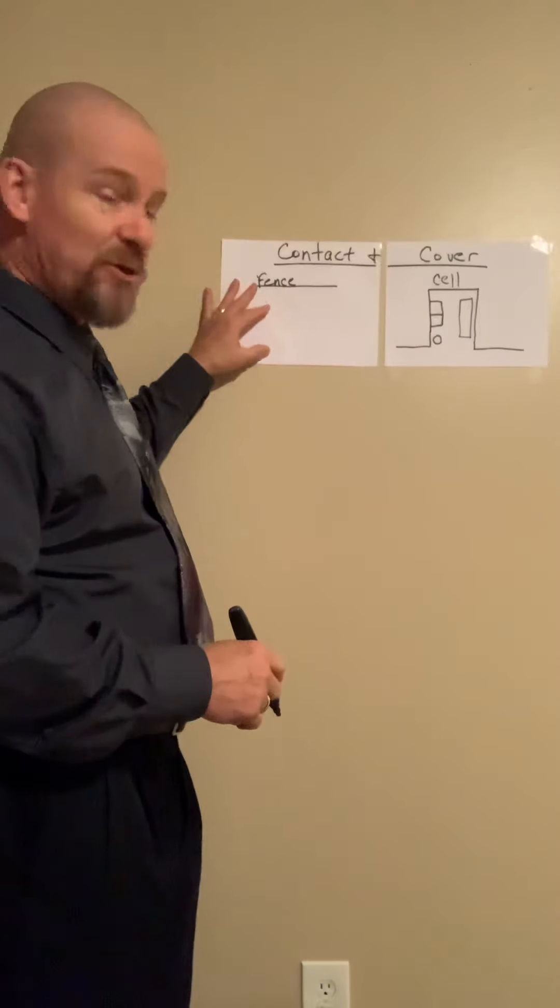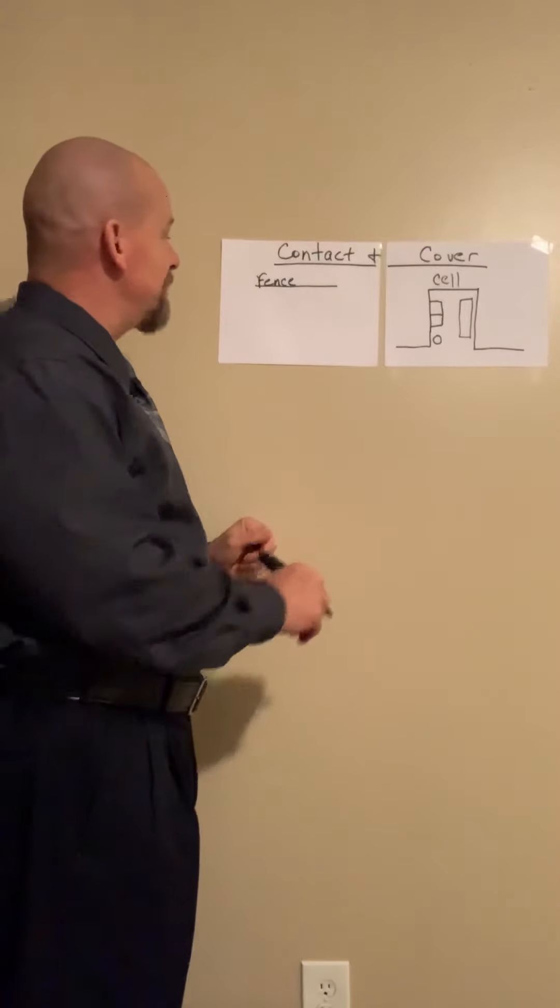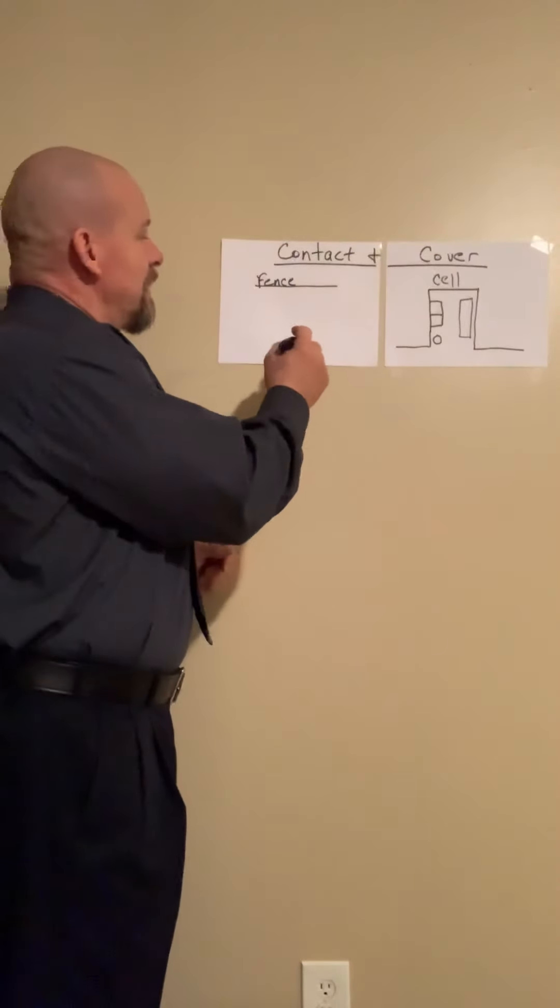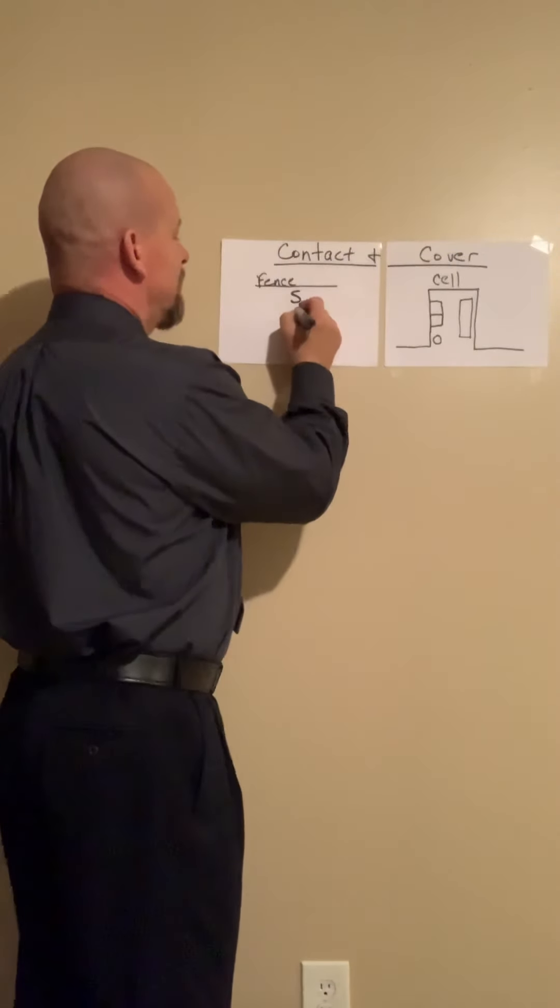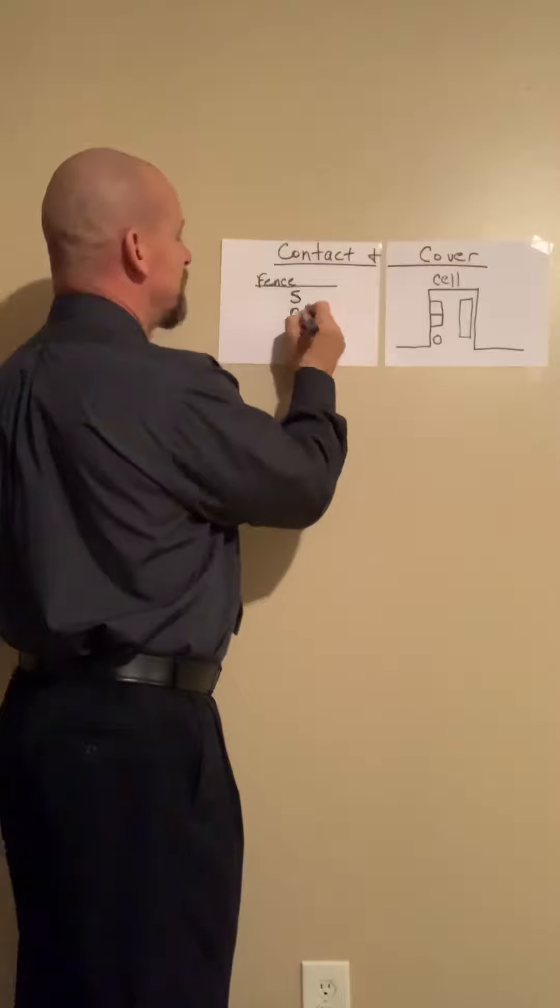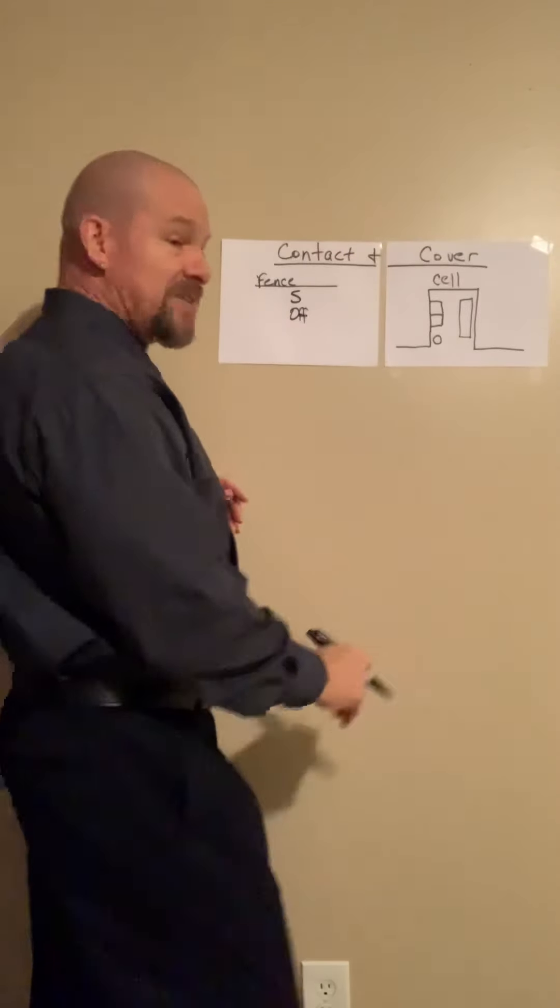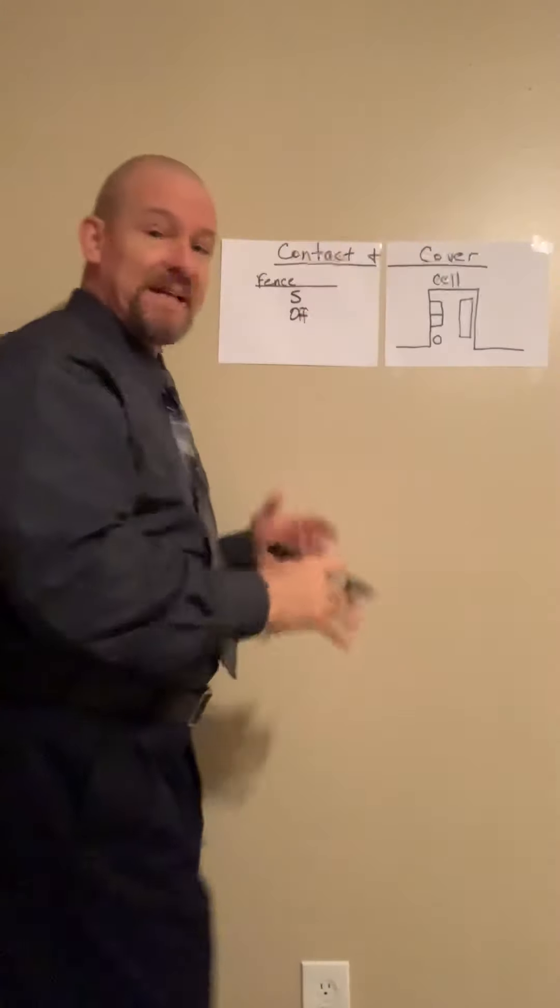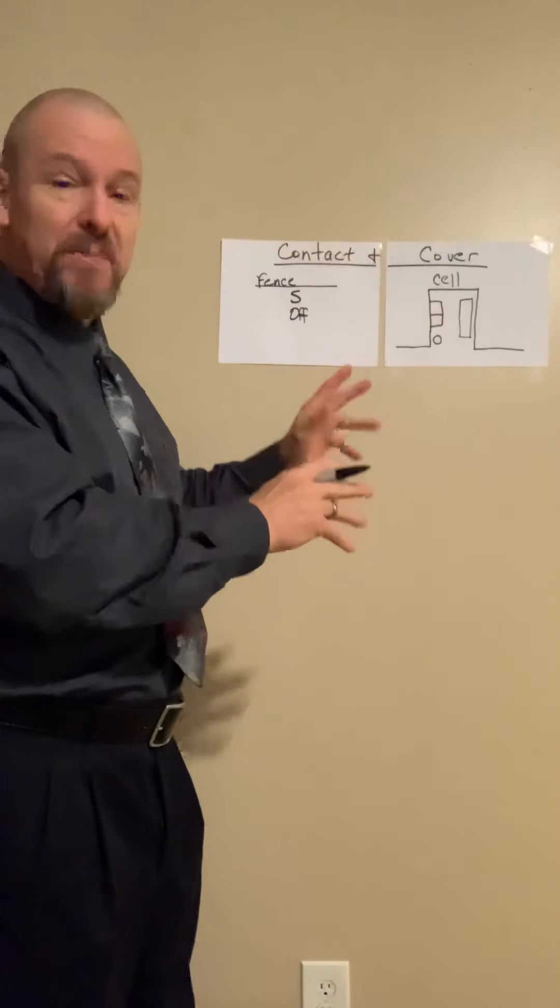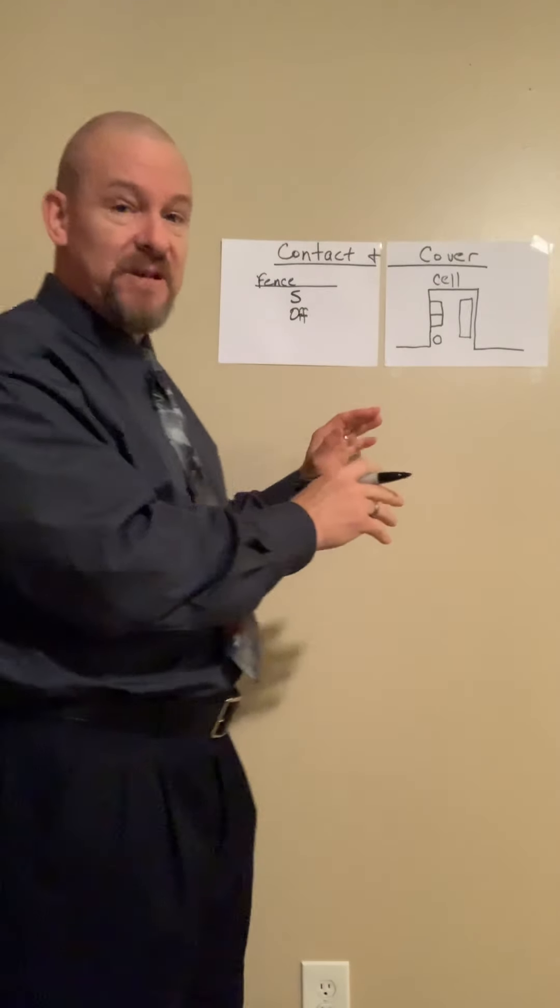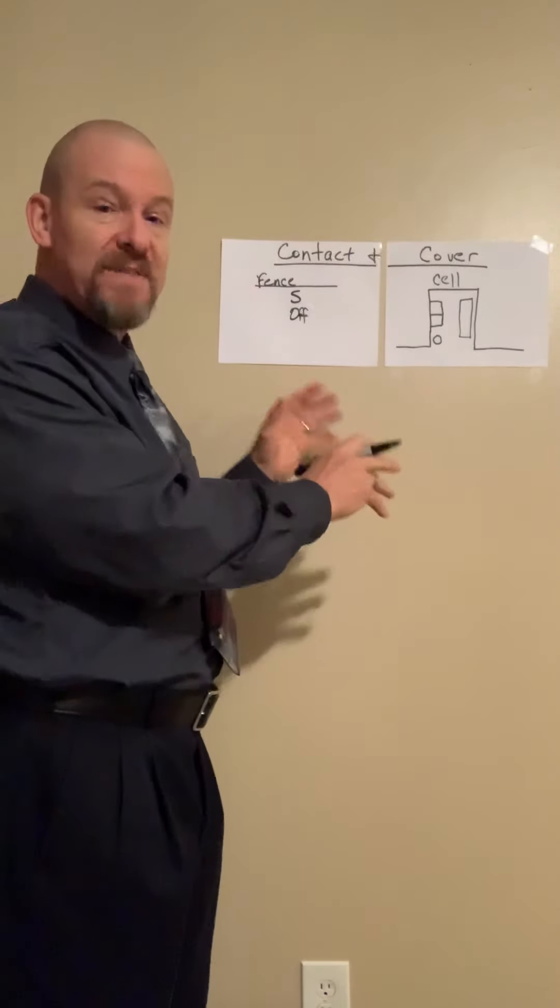Contact and cover. Start over here. Fence. In a prison, a jail institution. Put an S here for the suspect. Contact officer is going to be the officer right here. You've got somebody against the wall. The contact officer is the one making contact. He's talked to him, addressed him, put him on the wall. He's going to pat him down searching. That's his intention. So the contact officer is the one that handles verbally and physically control of that situation.